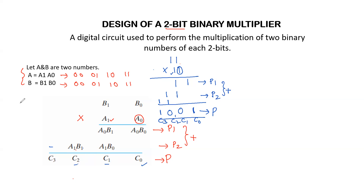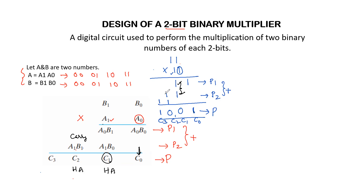Now we develop the circuit diagram based on this concept. A0 B0 is a single product bit, giving only C0, implemented with one AND gate. In the second position, A0 B1 plus A1 B0 means we are adding two bits, which requires one half adder. This half adder provides sum C1 and a carry to be added to the next order bits. Next, A1 B1 is added with the previous carry — again two bits — so another half adder is required.